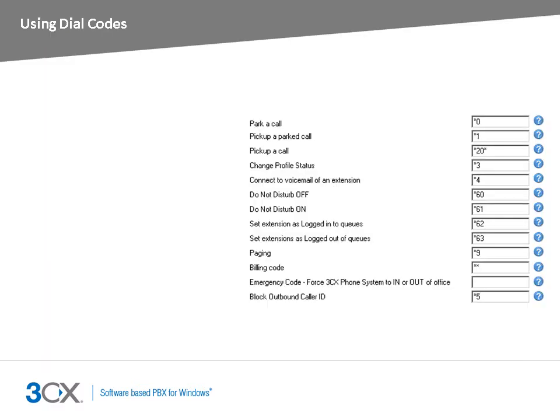Dial codes allow you to access functions within the 3CX phone system directly from your phone. Each dial code reserves a specific set of key combinations which can be altered by the administrator.